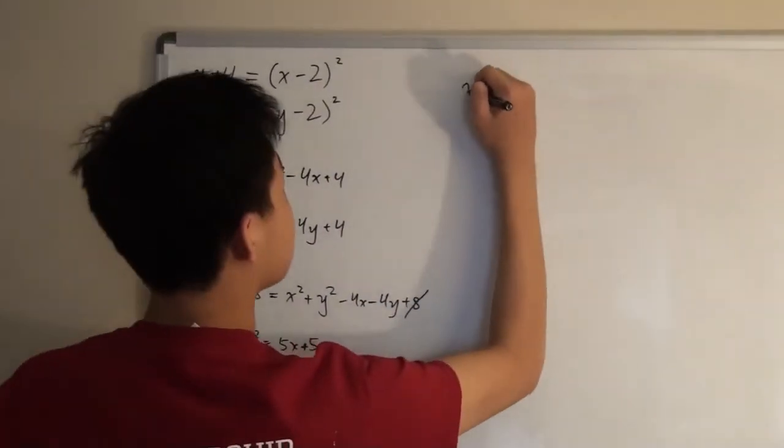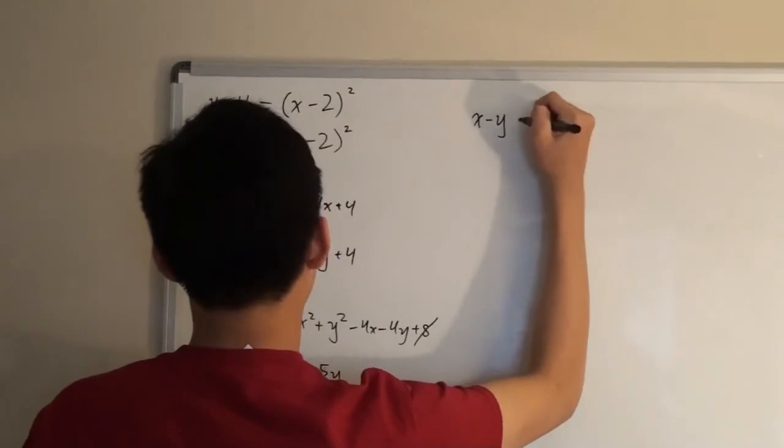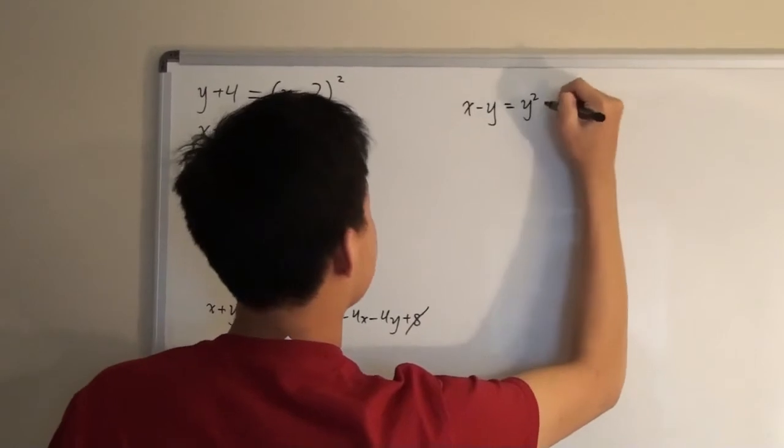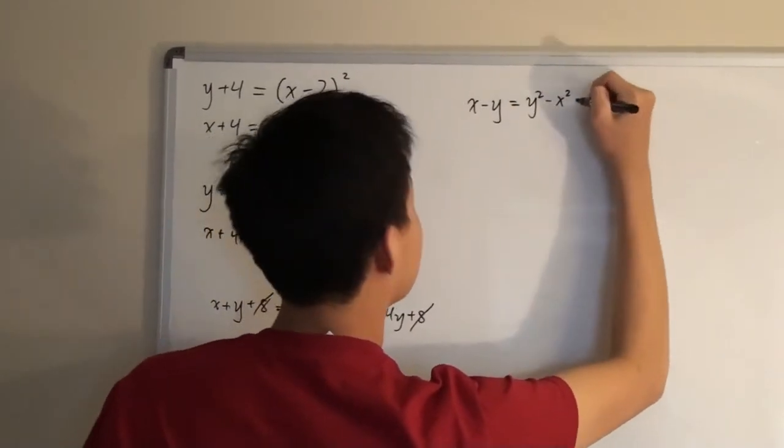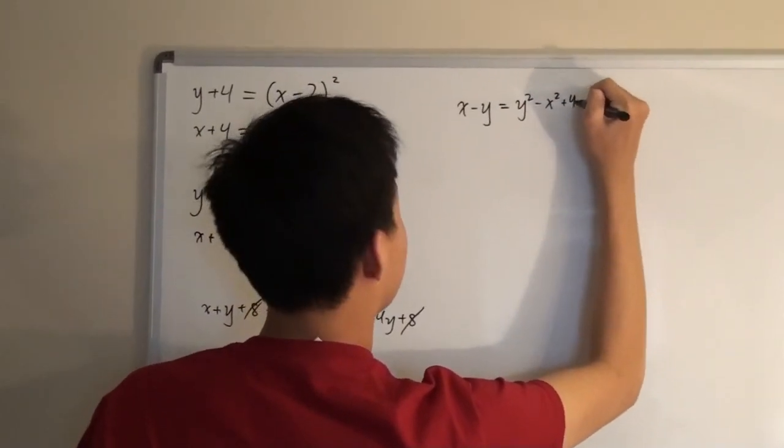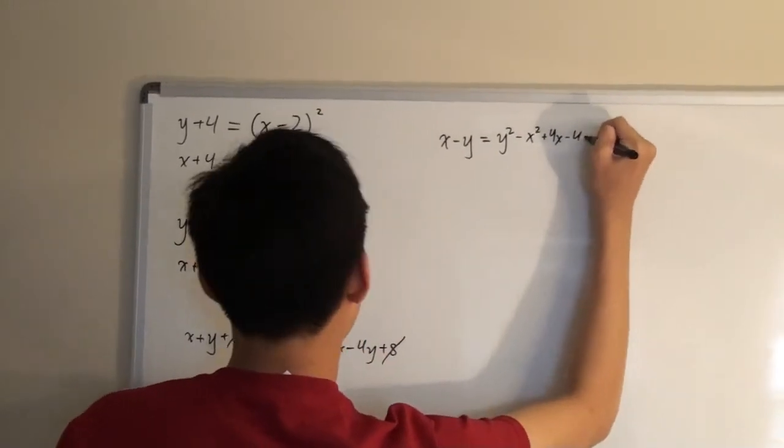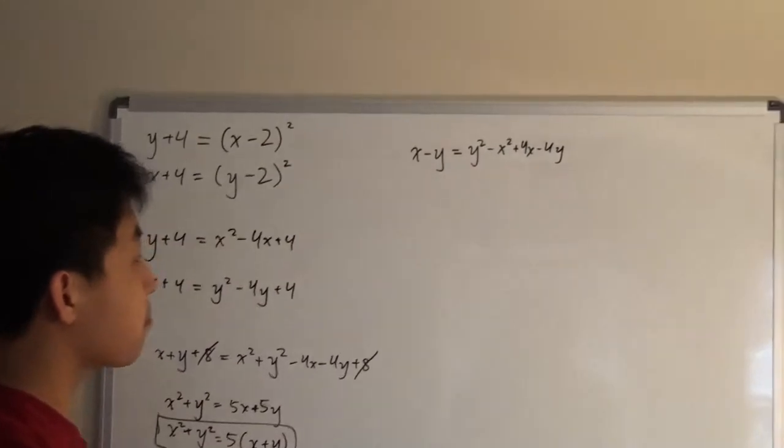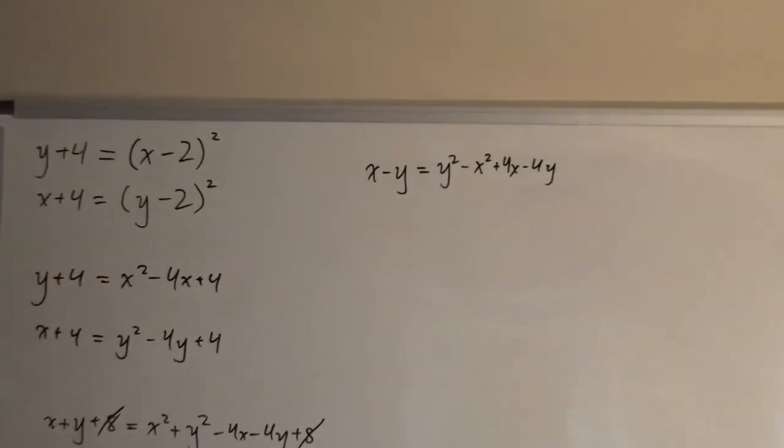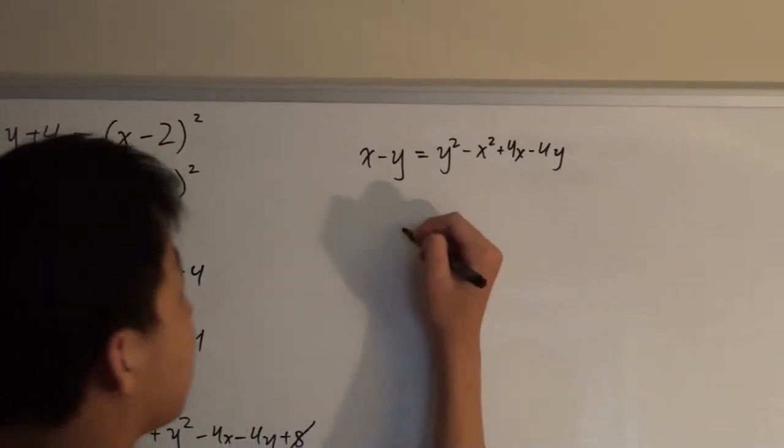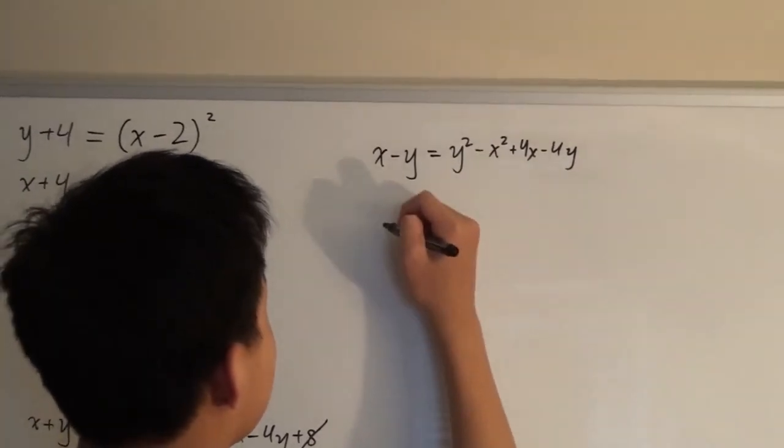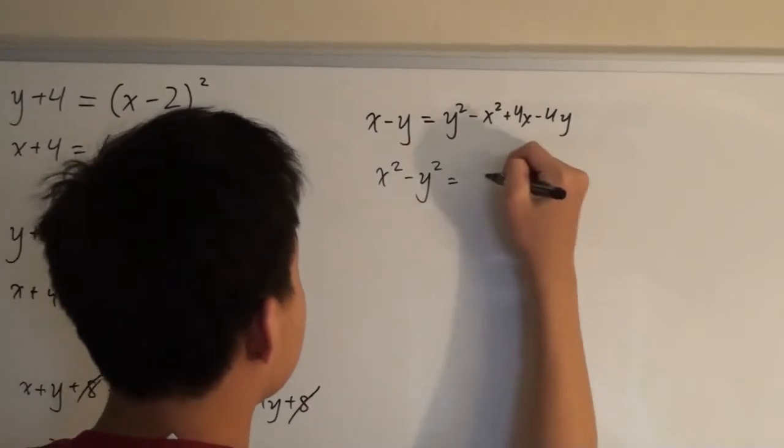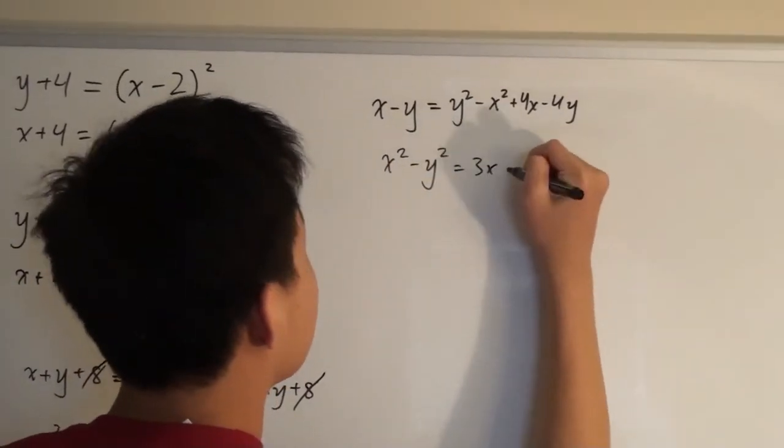And that would give us x minus y is equal to y squared minus x squared plus 4x minus 4y. And so we can also simplify this one.